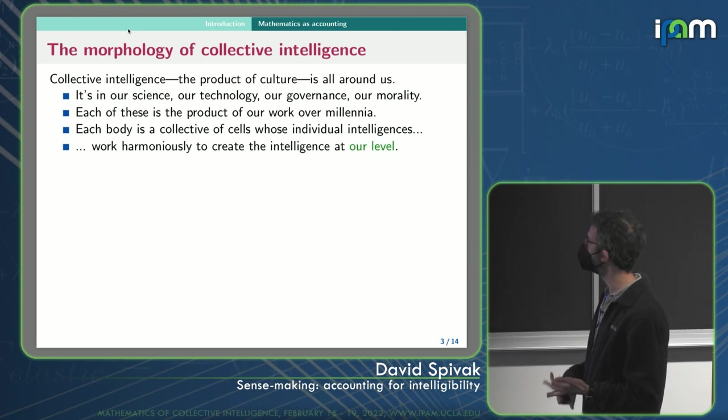Namely it's in our science. So what is collective intelligence? It's in our science, it's in our technology, our governance, and our morality, and everything else. So each of these, like our morality or our governance structure, is a product of work over millennia to try to refine what it is. And so each body, like my body, is a collective of cells whose individual intelligence work harmoniously to create the intelligence at my level.